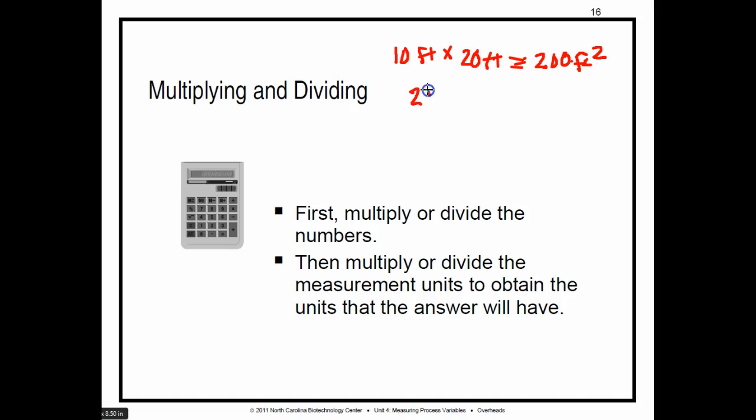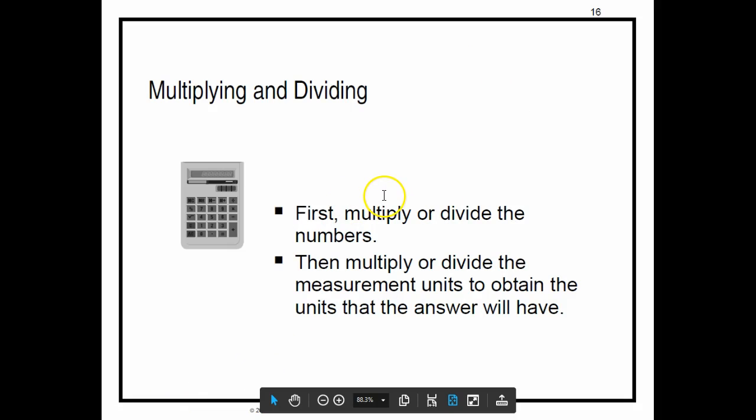Likewise, if we had 20 foot, and we were dividing it by 10 feet, then 20 over 10 would be 2, and foot over foot would cancel out. So we ended up with just 2. So that's what we end up with there.